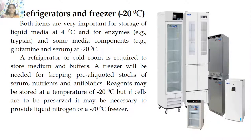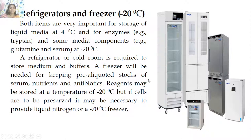Storage facility: refrigerators and freezers are very important for storage of liquid media at 4 degrees, and enzymes like trypsin and media components like glutamine and serum at minus 20 degrees centigrade. A freezer is needed for pre-allocated stocks of serum, nutrients, and antibiotics. If cells are to be preserved, liquid nitrogen at minus 90 to 196 degrees is necessary — this is called cryopreservation.